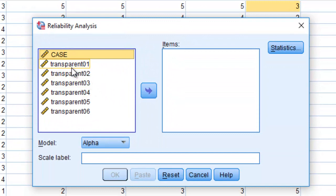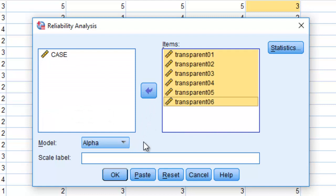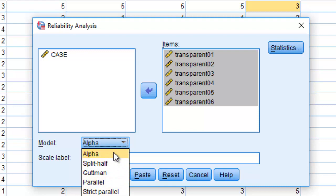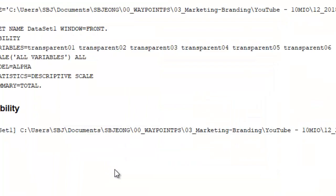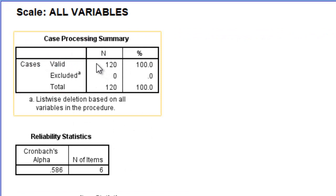We skip case and we move all six items over. Alpha is selected as the default. I'll go through these other types of reliability analysis in future videos. Click on the statistics. Ignore everything else here. And just click on item scale and item scale if item deleted. And then click on continue.